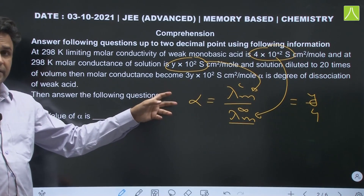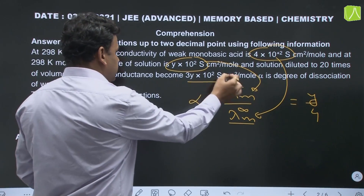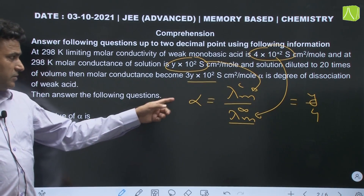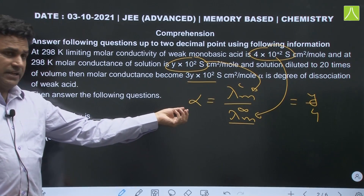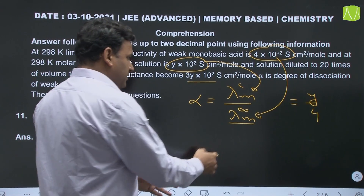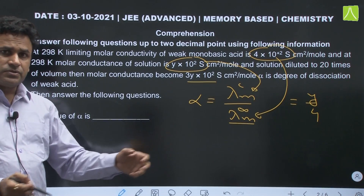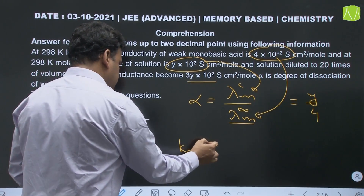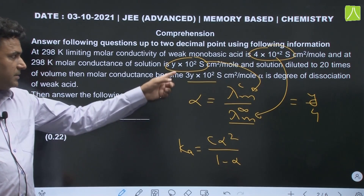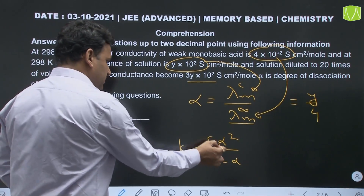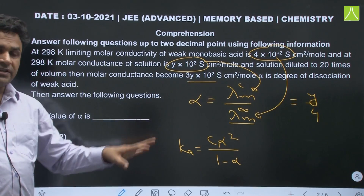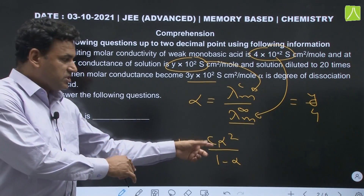After diluting 20 times, the conductivity has become 3 times, because of an increase in the degree of dissociation of the weak monobasic acid. So at the new concentration, the value of alpha becomes 3α. We can calculate the value of Ka of the weak acid using Ka = Cα²/(1 − α). At initial concentration C1, with alpha known, this equals K.